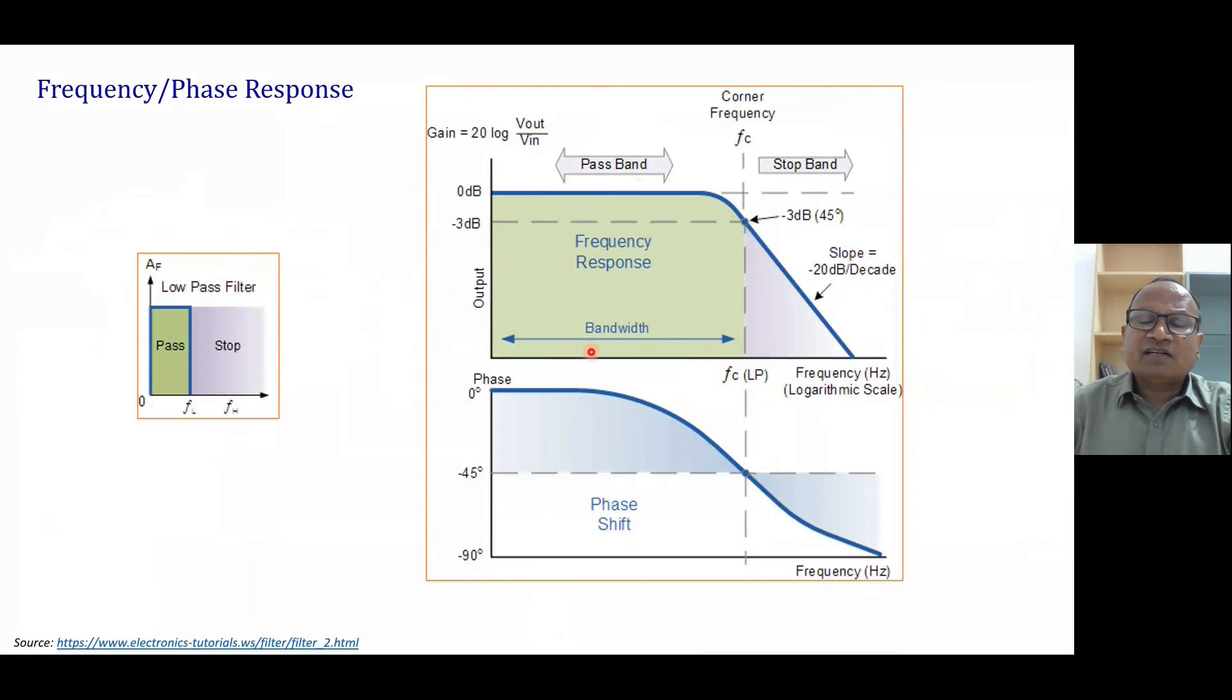Why do we say it as a low pass filter? Because when we are going towards low frequency, you see here the gain is increasing. It means the signal is passed. Gain is increasing means what? VO divided by VI is gain. VI is input. So output is more and more when we are going towards low frequency. When we are going towards high frequency, the output is very less. So signal is attenuated and therefore we call it as a stop band. And this is your pass band.